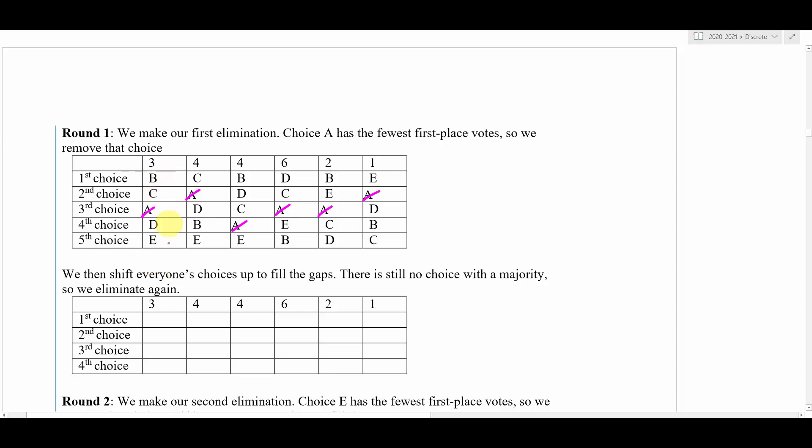This column would be B, C, D, E. The A is no longer there. Then this one would be C, D, B, this one would be B, D, C, E, this one would be D, C, E, this one would be B, E, C, D, and this one would be E, D, B, C. Then we would run another plurality vote as if A were not there.